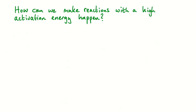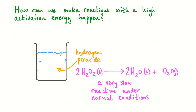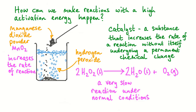Some reactions happen very slowly or not at all under normal conditions because they have a high activation energy. Hydrogen peroxide is a liquid substance that can decompose to make water and oxygen gas. This reaction is very slow under normal conditions — you wouldn't see many bubbles of oxygen gas forming. If we add a small amount of a black powder called manganese dioxide to the hydrogen peroxide, we see a sudden increase in the number of oxygen bubbles being produced every second. The manganese dioxide is behaving as a catalyst.